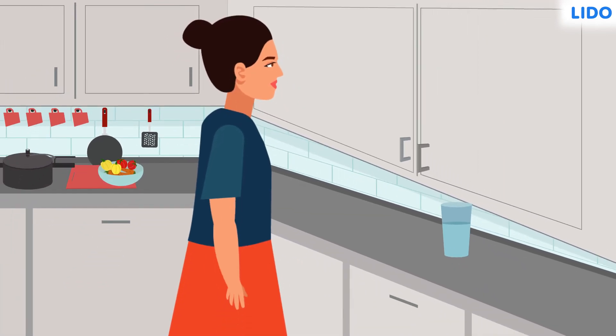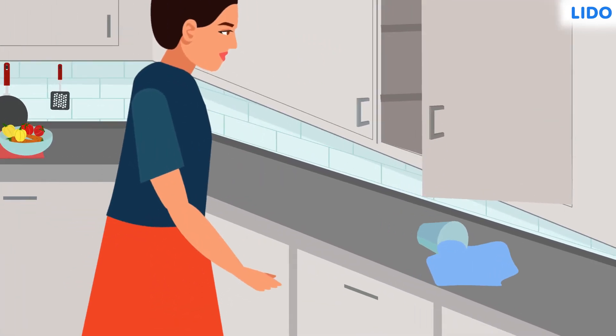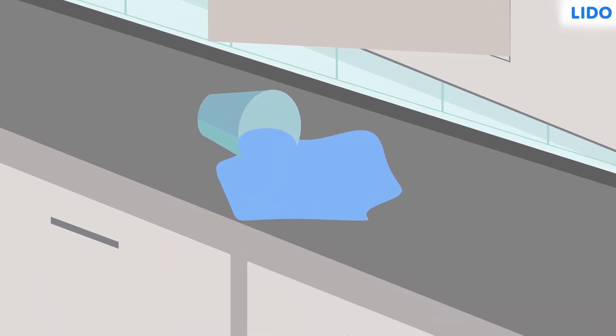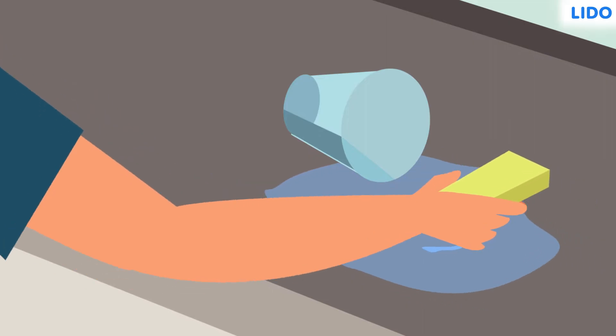While looking for the jar of cookies, Vaishnavi accidentally spilt water on the kitchen platform. She must clean it up before her mom notices. She decides to use a sponge to clean up the water.